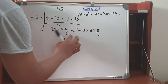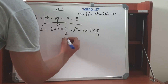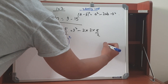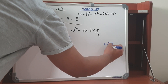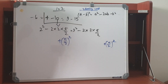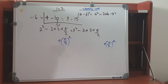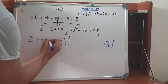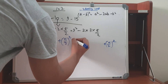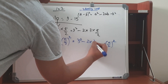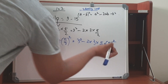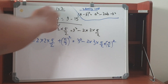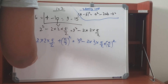Now we will add (5/2) squared to both sides. We write the equation as: 2 squared minus 2 times 2 times (5/2) plus (5/2) squared equals 3 squared minus 2 times 3 times (5/2) plus (5/2) squared. Using the identity a squared minus 2ab plus b squared, here a is 2 and b is 5/2.